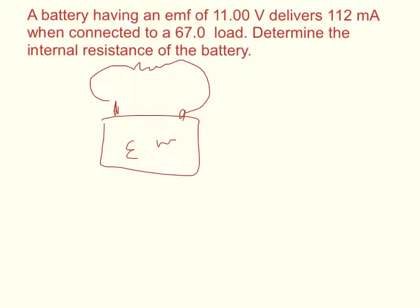You can determine the EMF is equal to the current times the resistance, which will give us delta V, plus the current times the internal resistance, lowercase r.